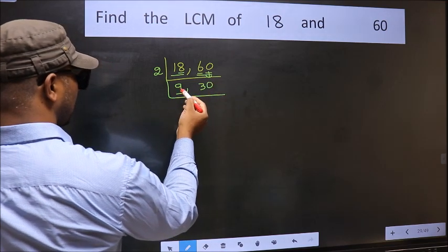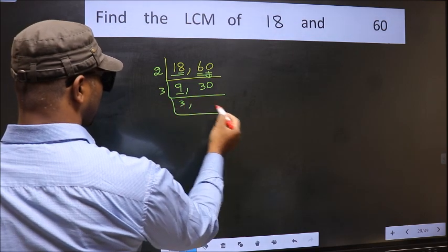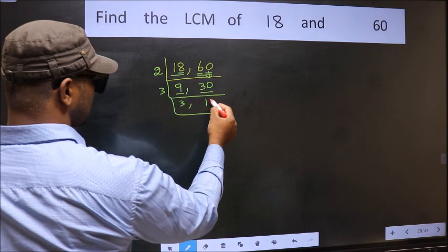Now here we have 9. 9 is 3 threes, 9. The other number, 30. When do we get 30 in the 3 table? 3 tens, 30.